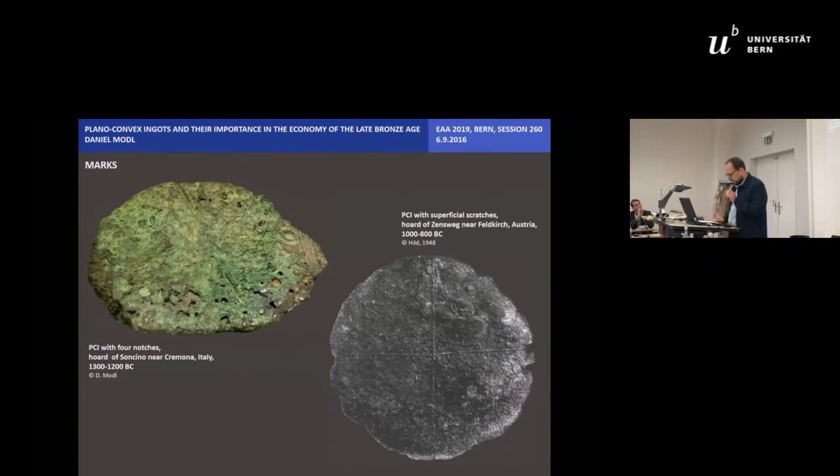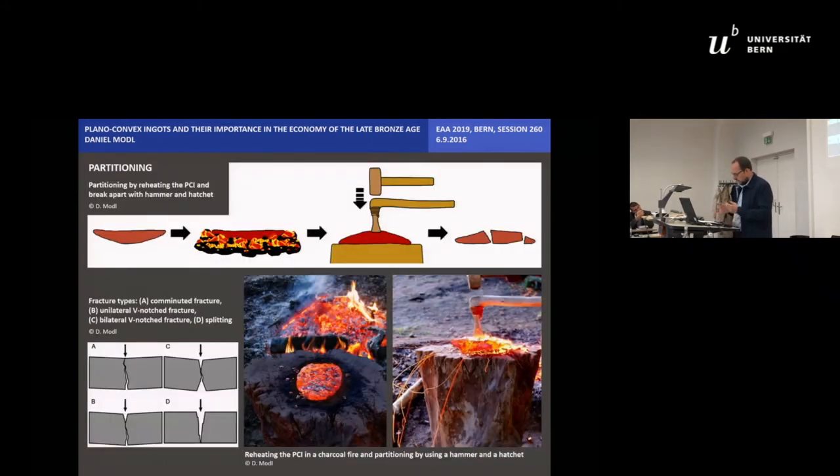Often, the PCI shows scratches or deeper notches that were accurate in a dewy copper on the top surface to determine where to divide it into halves and quarters. The further procedure was depending on the porosity and thickness of the PCI. If an ingot was rich in gas bubbles and chalcopyrite or copper sulfide inclusions, it could be broken under cold and warm conditions by crashing it with a hammer on massive support.